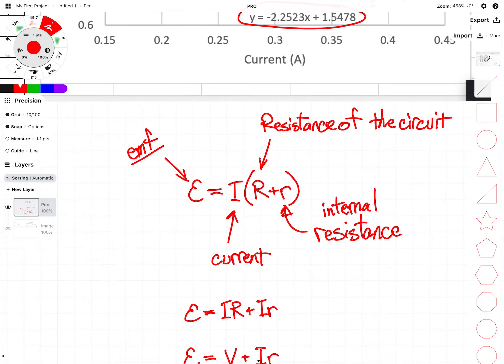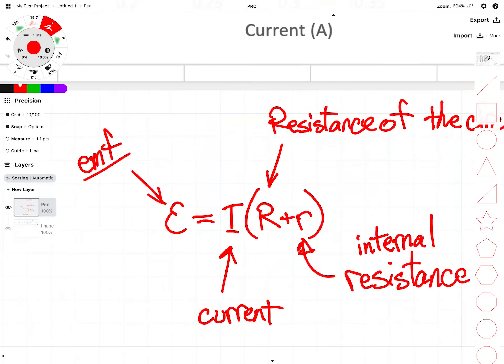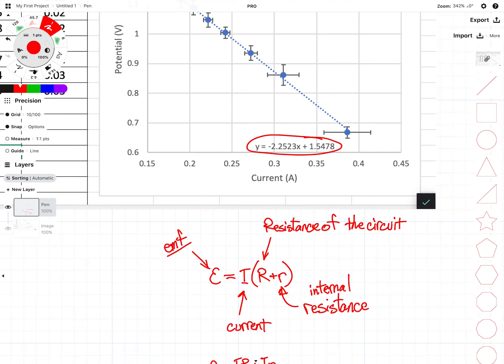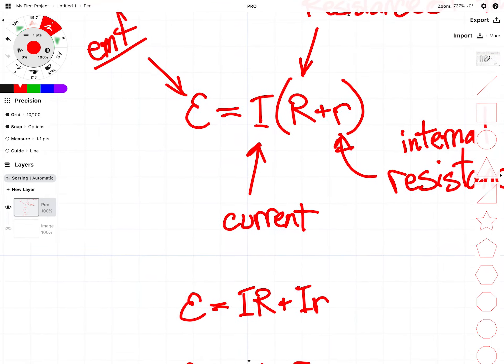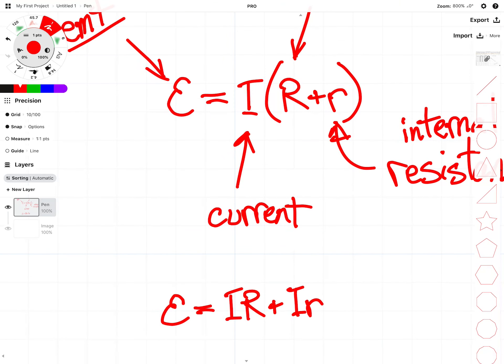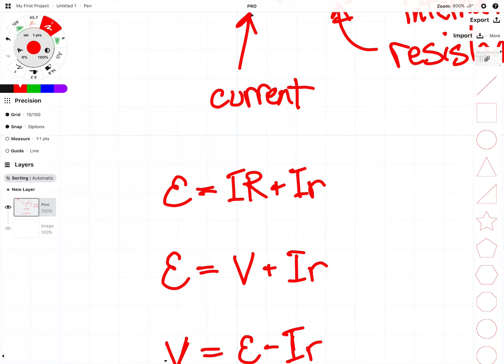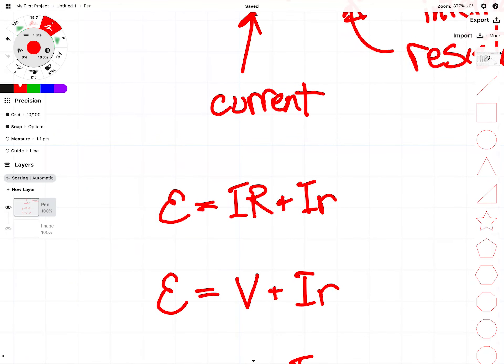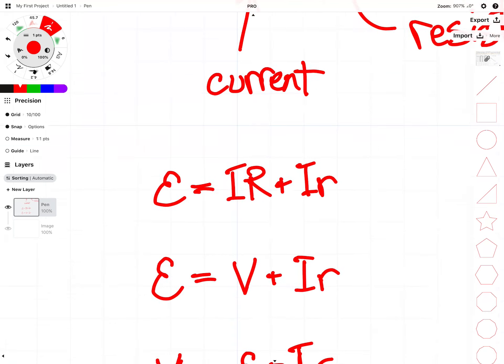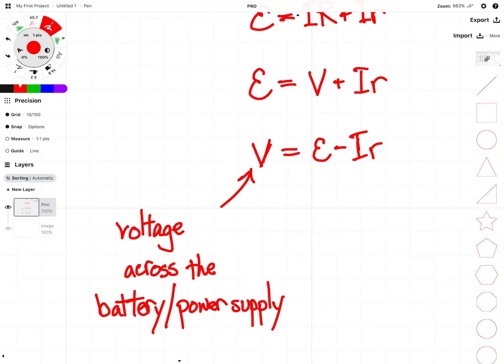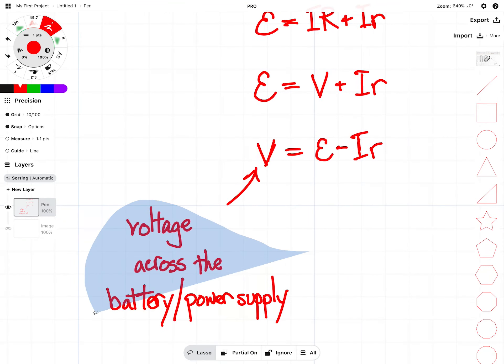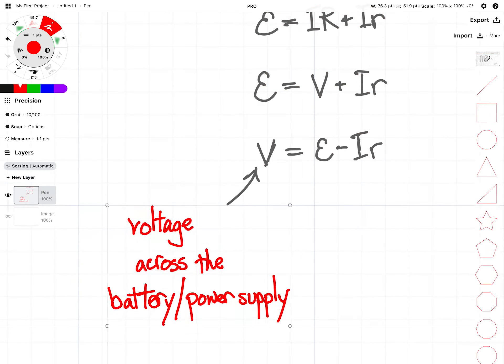Our next step on our quest to turn this equation into something like this equation is to distribute current to both resistances inside our parentheses there. Using Ohm's law then, note that IR will become a voltage, and this voltage has a very specific value. This is the voltage that we measure across the battery or power supply.